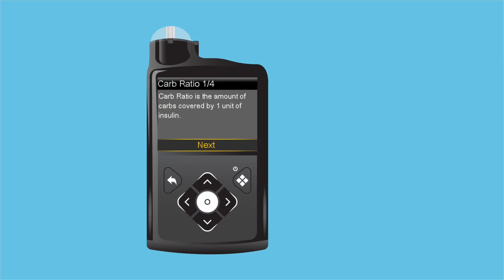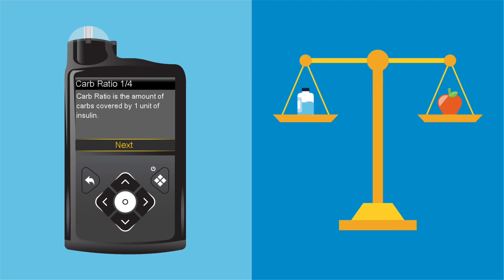The first setting is the carb ratio, the number of carbohydrate grams covered by one unit of insulin. Andy selects Next and then selects the time segment. Since Andy's doctor prescribed only one carb ratio, the end time stays at 12 a.m. He presses Select and uses the arrows to enter the carb ratio. He presses Select, then Next to continue.